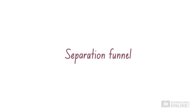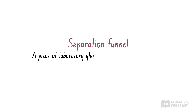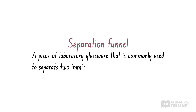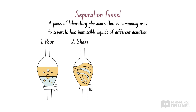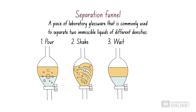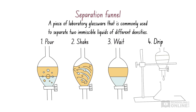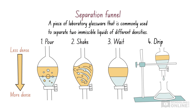A separation funnel is a piece of laboratory glassware that is commonly used to separate two immiscible liquids of different densities. A mixture is poured into the separation funnel and the funnel is shaken. Afterwards, the mixture is left to settle inside the separation funnel. Over time, the more dense liquid settles to the bottom of the funnel, while the less dense liquid floats on top. The more dense liquid is run off through a tap at the bottom of the separation funnel, leaving the less dense liquid in the funnel.